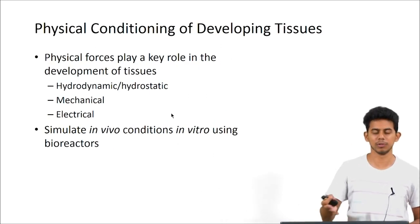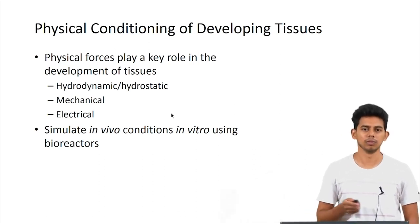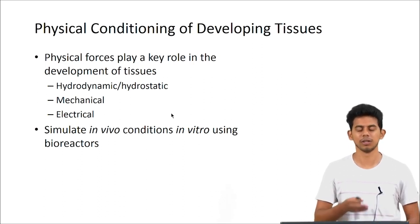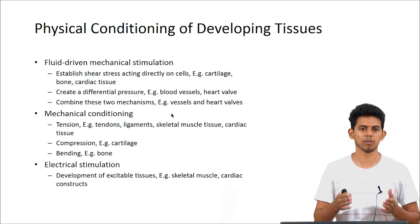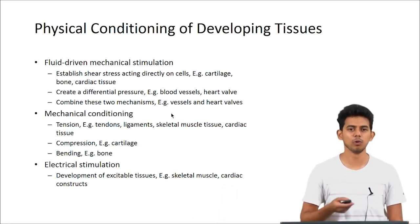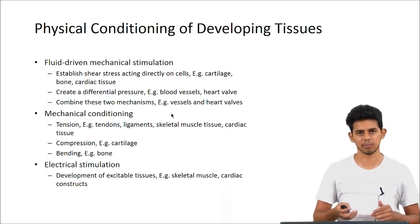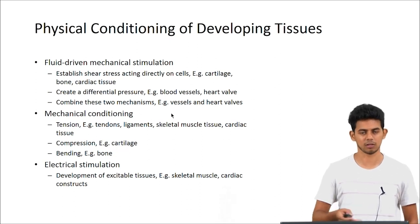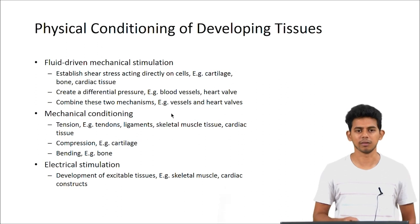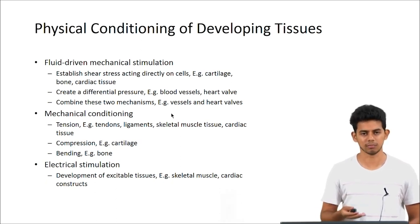Physical conditioning of developing tissue - this would be the third aspect that bioreactors need to look at. Physical forces as mentioned in the previous talk do play an important role. Different types of physical forces play a role like hydrodynamic or hydrostatic forces, mechanical or electrical forces. The aim of the bioreactor here would be to simulate these in vivo conditions inside the bioreactor too. Some of the basic physical conditions in vivo are fluid driven mechanical simulation wherein a shear stress can be induced on the cells by the fluid, especially in the heart valve. You can also create a differential pressure and even combine these two mechanisms especially in making vessels and heart valves. Mechanical conditioning wherein you give tension or compression like in bone and cartilage, and electrical stimuli which is used in cardiac skeletal and muscle constructs.